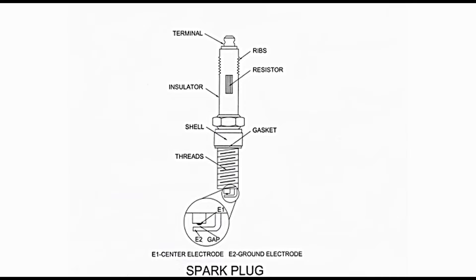Referring to the diagram that presents details of the spark plug. At the top, there is a terminal point connected to the ignition coil through a well-insulated wire. This terminal is connected to the E1 center electrode through a resistor. The resistor suppresses ignition noise generated during the spark, and also prevents disruption to radio reception and electrical interference with other components in the vehicle.